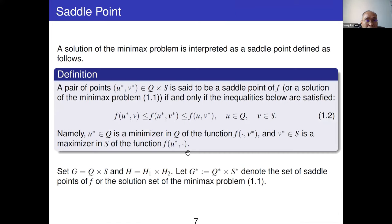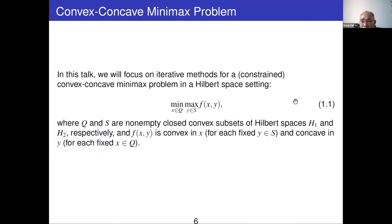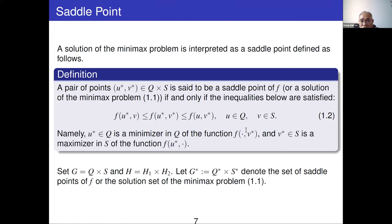Let me define the tool called saddle point. A pair of points u* and v* in the product set Q×S is called a saddle point of f — a solution of the minimax problem 1.1 — if two inequalities hold: v* is the maximizer and u* is the minimizer. In the following, I use G to denote the product set Q×S, H the product space H1×H2, and G* the solution set of the minimax problem.